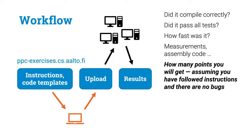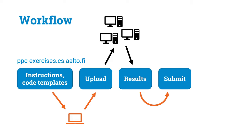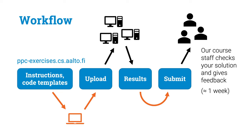If all went well, you will also find a prediction of how many points you should get, assuming you have followed all the instructions and there are no bugs in your code. If you are not happy with what you see, you can retry automatic grading as many times as you want. And then, once you are happy with everything, you can submit it to a human being for the final grading.